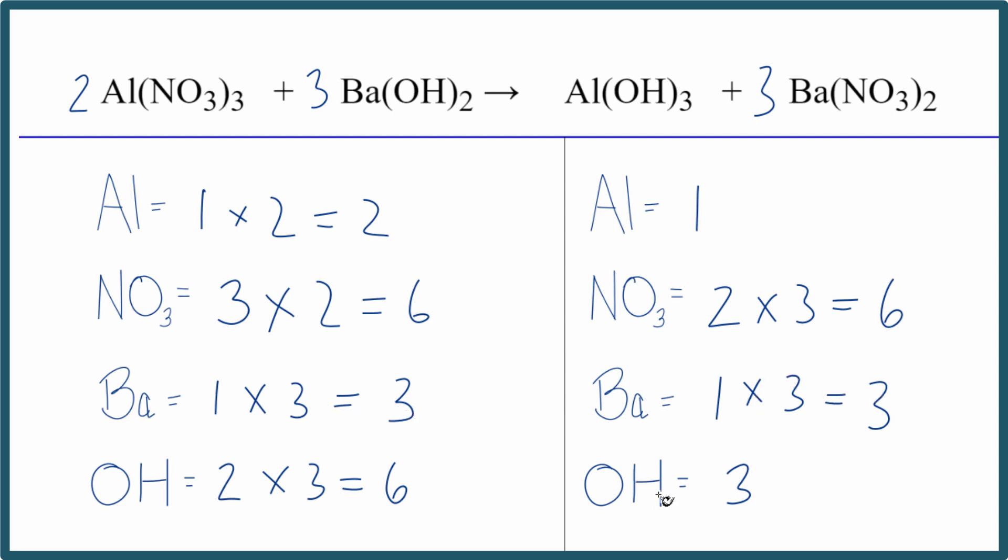Looks like we need to get this to be six. If we put the two as our coefficient in front of aluminum hydroxide, I have one times three, three hydroxides times two. That'll give me six. One aluminum times two gives me two. And now this equation is balanced.